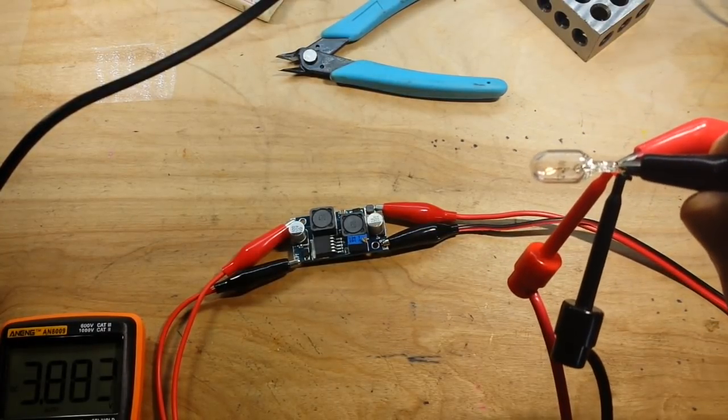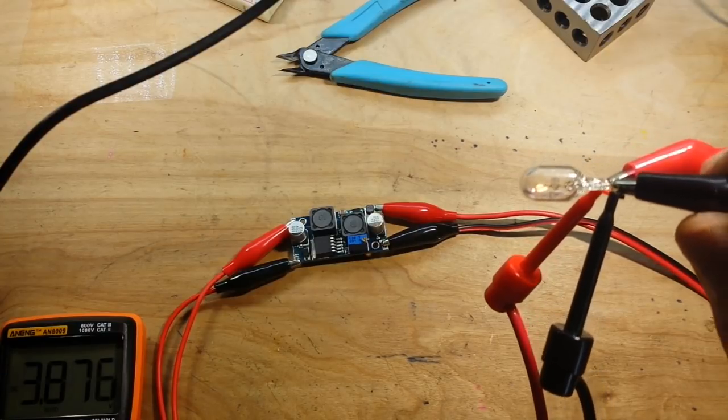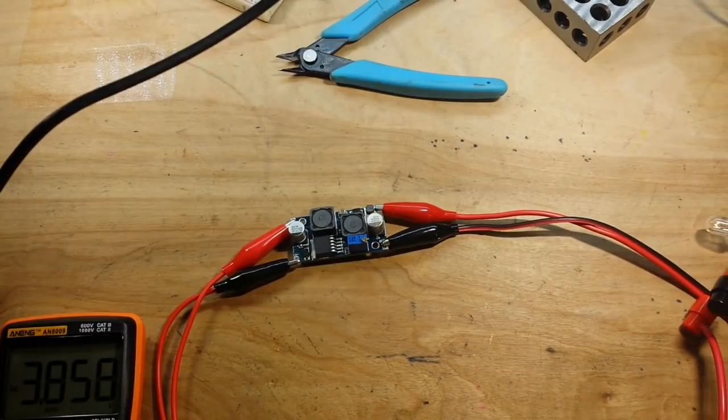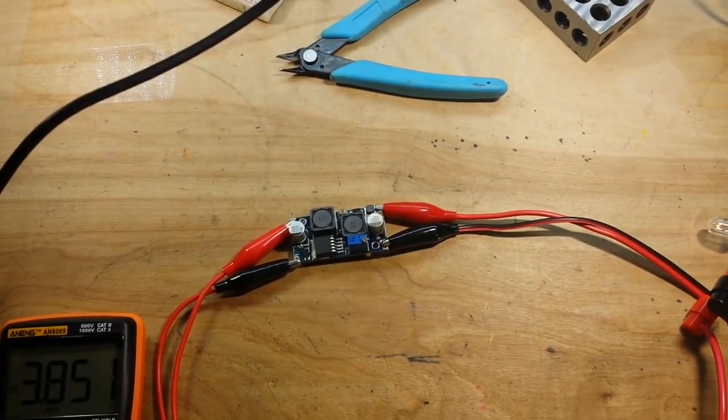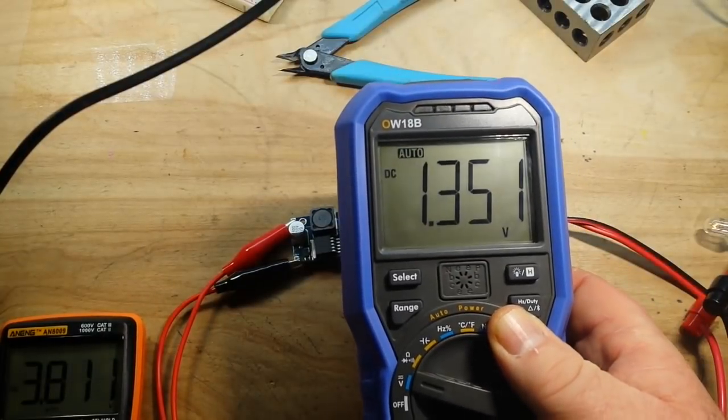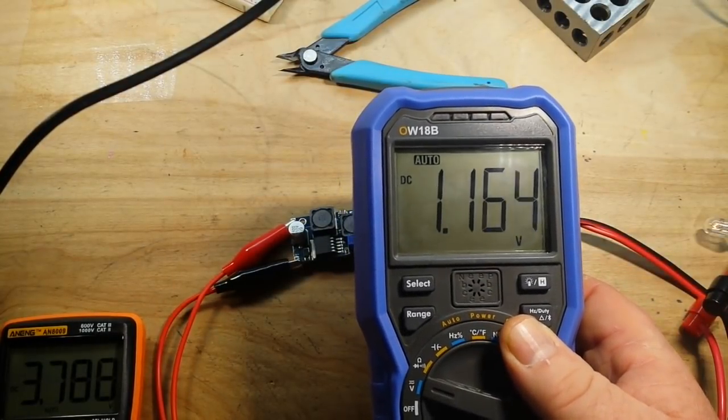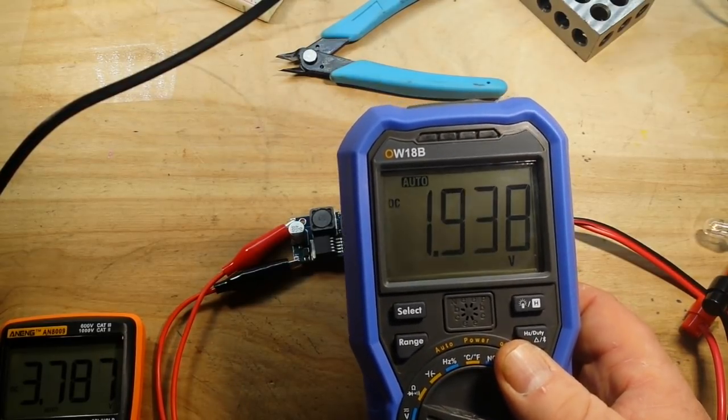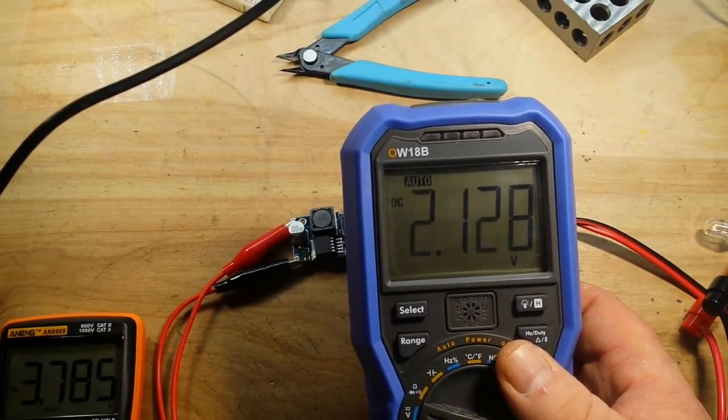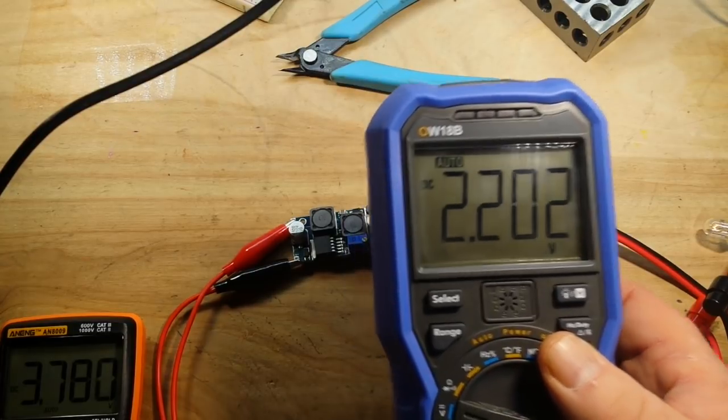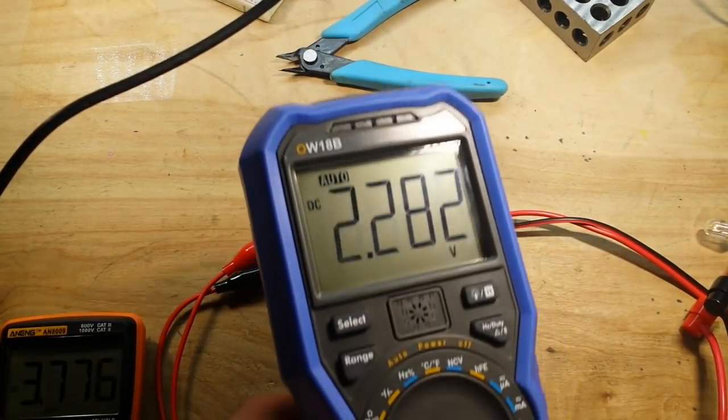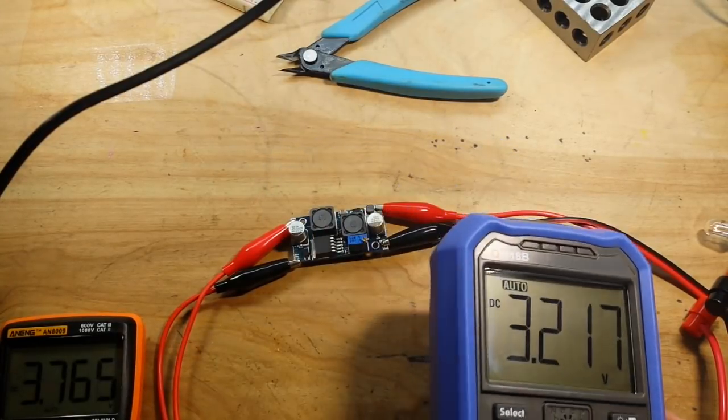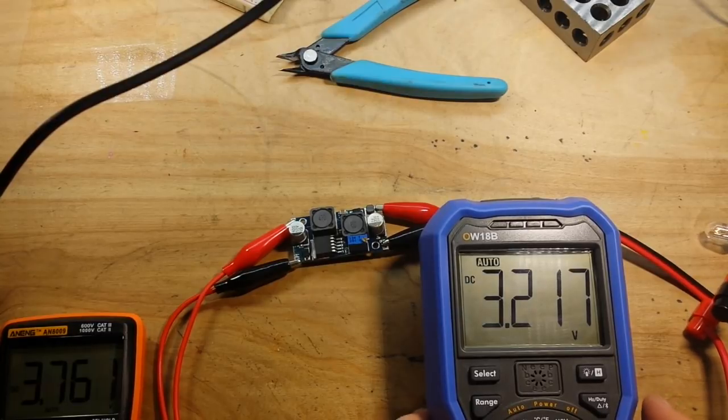This is our input side and this is our output side. For our test we're using a 12 volt license plate bulb for a car. I am putting in about 3 volts. That's a little strange, I don't know why it's bouncing all over the place. Must have a loose cable or something. There we go, 3.2 volts, that's our in.